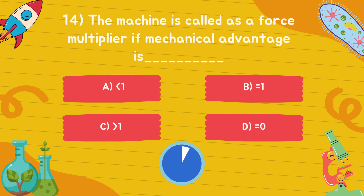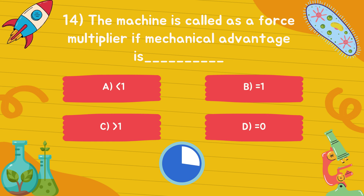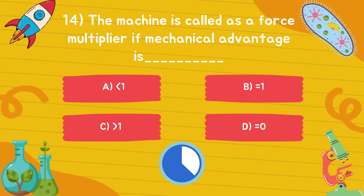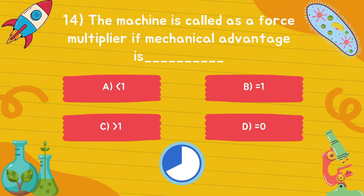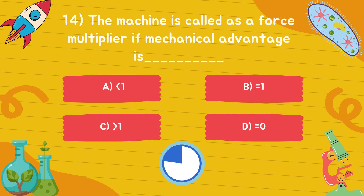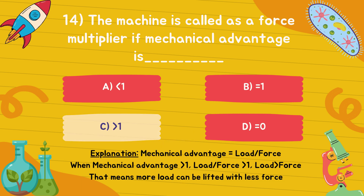The machine is called a force multiplier if mechanical advantage is... Answer is option C, greater than 1.